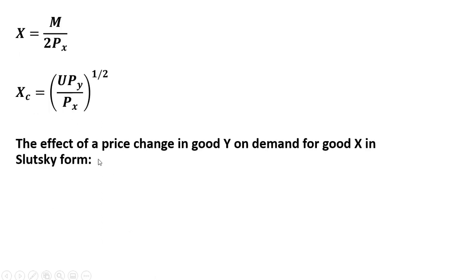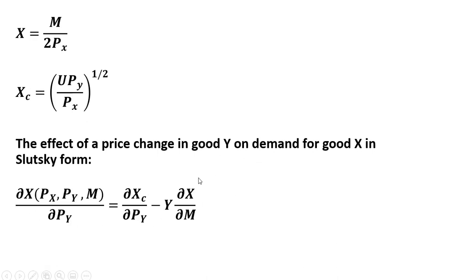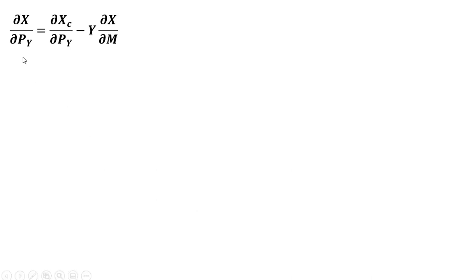Now, the effect of a price change in good Y on the demand for good X in Slutsky form is going to look something like this. On the right-hand side, the first term is the substitution effect — it captures the substitution effect of an increase in the price of good Y on the demand for good X. The last term on the right-hand side captures the income effect: when the price of good Y increases, that will reduce consumers' real purchasing power, which will then have an effect on the demand for good X. So writing this cross-price effect in Slutsky form: how does the change in the price of good Y affect the demand for good X?